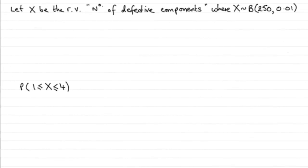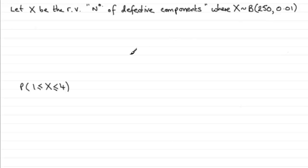For this last part, I've redefined our random variable X to be the number of defective components, where X is distributed binomially. I've altered the value of N to 250, and the probability of getting a defective component still remains the same at 0.01. We need to use a suitable approximation to find the probability that in a batch of 250 components there are between 1 and 4 inclusive defective components.